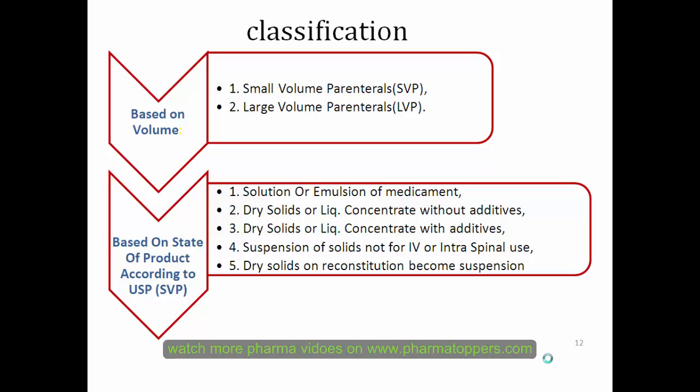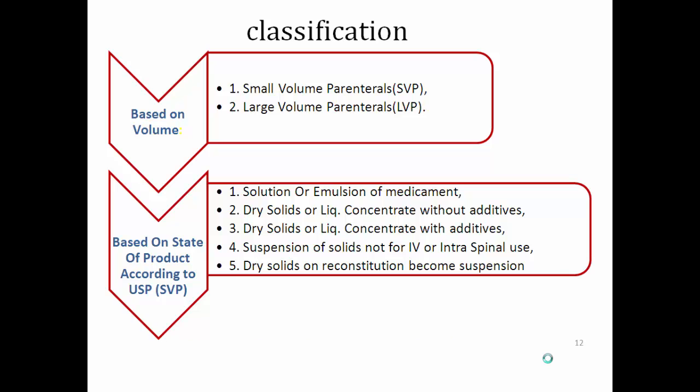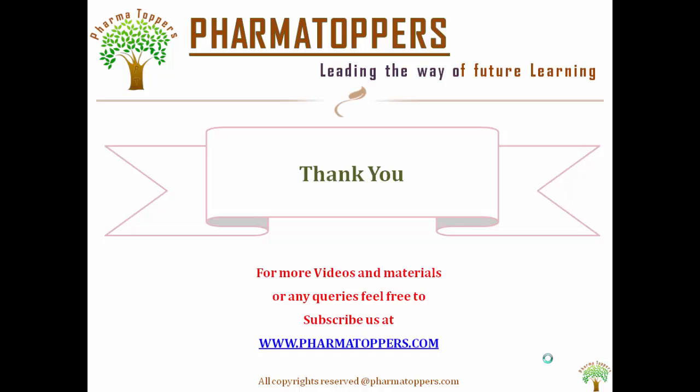The classification of parenterals has mainly two types: based on volume and based on the state of the product. Based on volume, there are small volume parenterals and large volume parenterals. Based on the state of the product, there are five subtypes: solution or emulsion of medicament, dry solids or liquid concentrate without additives, dry solids or liquid concentrate with additives, suspension of solids not for ophthalmic or intraspinal use, and dry solid for reconstitution which becomes a suspension.